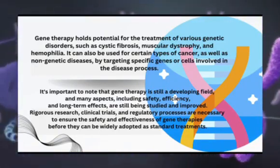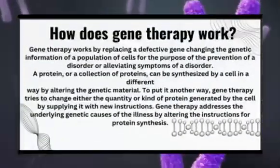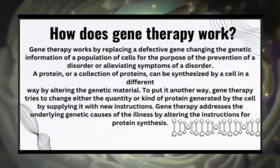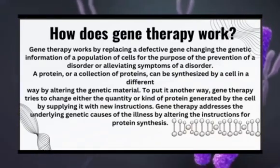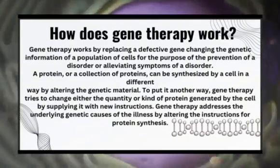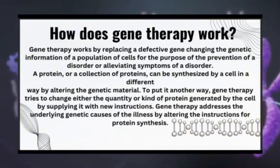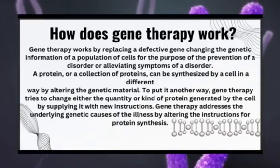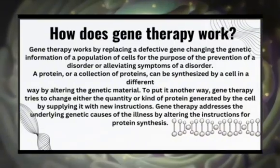Before they can be adopted as standard treatment, gene therapy works by replacing the defective gene, changing the genetic information of a population of cells for the purpose of prevention of disorders or alleviating symptoms. Proteins can be synthesized by a cell differently by altering the genetic material. In other words, gene therapy tries to change either the quality or the kind of protein generated by the cell by including new instructions.